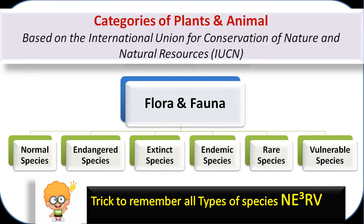The six IUCN categories are: normal species, endangered species, extinct species, endemic species, rare species, and vulnerable species. So that you don't miss any name in the examination, here is a short trick. Remember the initials N, E-cube, R, V — where N represents normal species, E-cube represents endangered, extinct, and endemic, R represents rare species, and V represents vulnerable species.